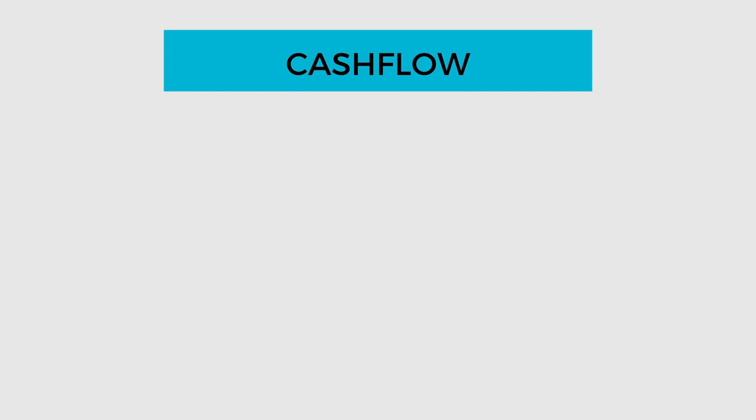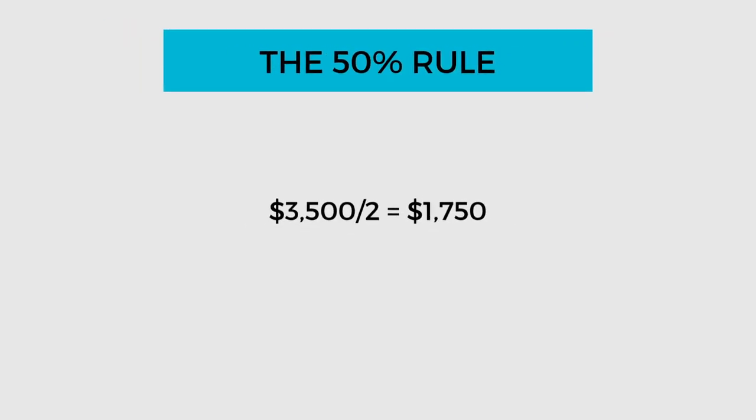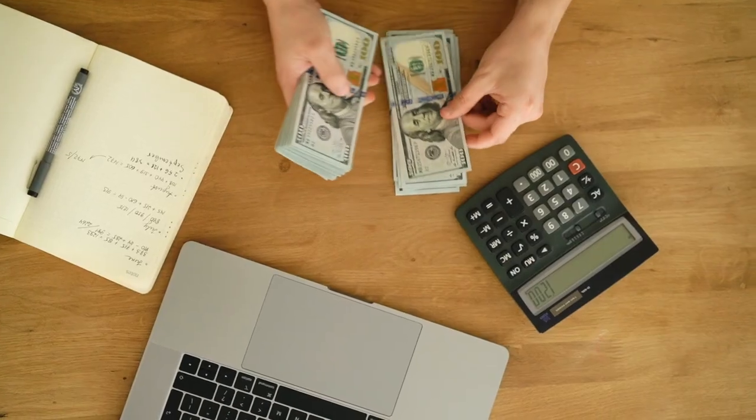As promised, here are a couple of quick hacks to calculate your projected returns very quickly. There is something called the 50% rule in real estate investing. This rule states that in general, 50% of the revenue that the property brings in needs to be allocated towards expenses, not including the mortgage payment. So if your monthly rent is $3,500, your expenses would be roughly $1,750. That leaves $1,750 left over for mortgage payment and cashflow. But in order to calculate cashflow, we need to know how much our mortgage payments will be — and I have hack number two for that.